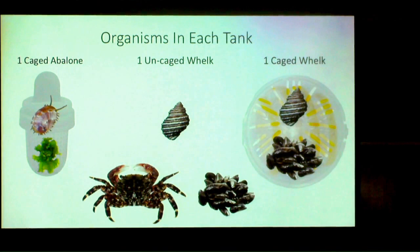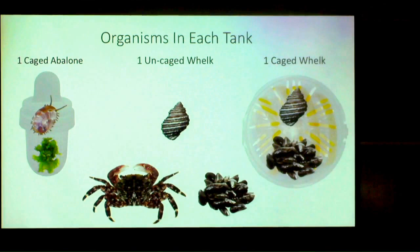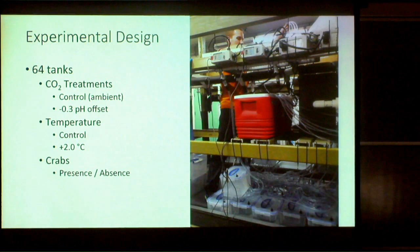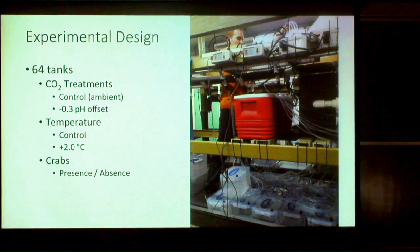We also had whelks free to roam around the tanks, feeding on the same mussel population provided for the crabs. Only half the tanks had crabs — presence or absence of crabs was one of the factors we're looking at, along with temperature and ocean acidification. That's why we needed 64 tanks. We had CO2 treatments, temperature treatments, and crab treatments.